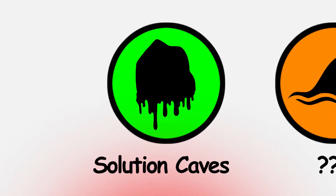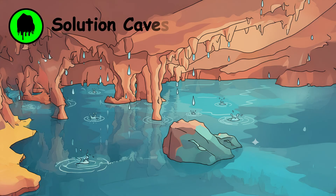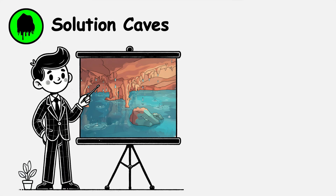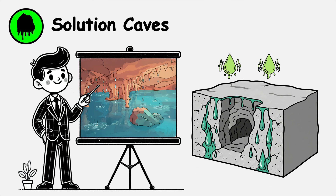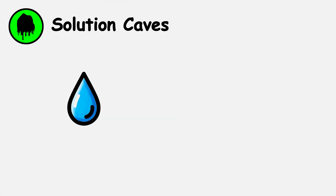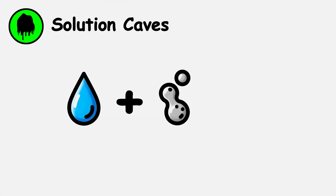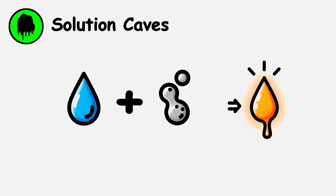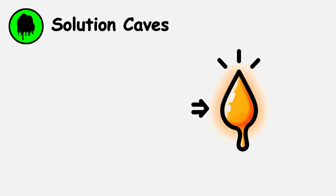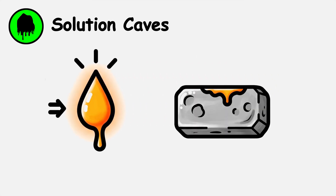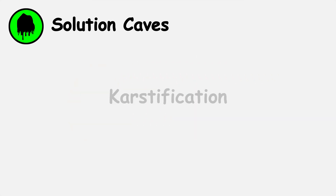Solution Caves. The most common cave type forms when slightly acidic rainwater dissolves limestone and similar rocks. Rainwater absorbs carbon dioxide, creating carbonic acid that slowly dissolves calcium carbonate in a process called karstification.